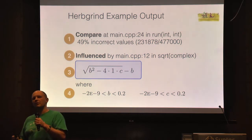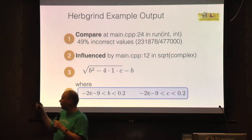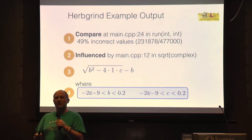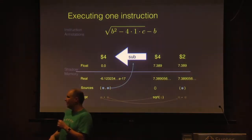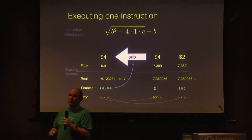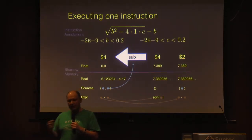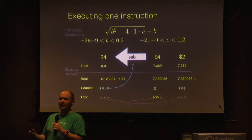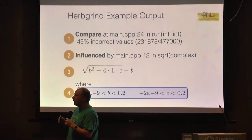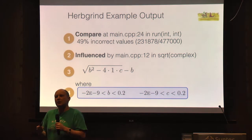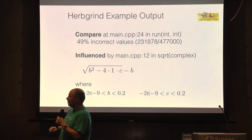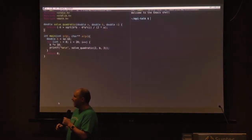We symbolically track the computation for every operation so we know at a high level how that value was generated. Remember, we're doing this for every single assembly instruction, so this should start to make you nervous — but we'll talk about some tricks. The last thing I want to know is the input regime: for that expression at that location in the source, what were the inputs where error occurred that contributed to getting an inaccurate output? So we track ranges of values flowing into the operands for every instruction.